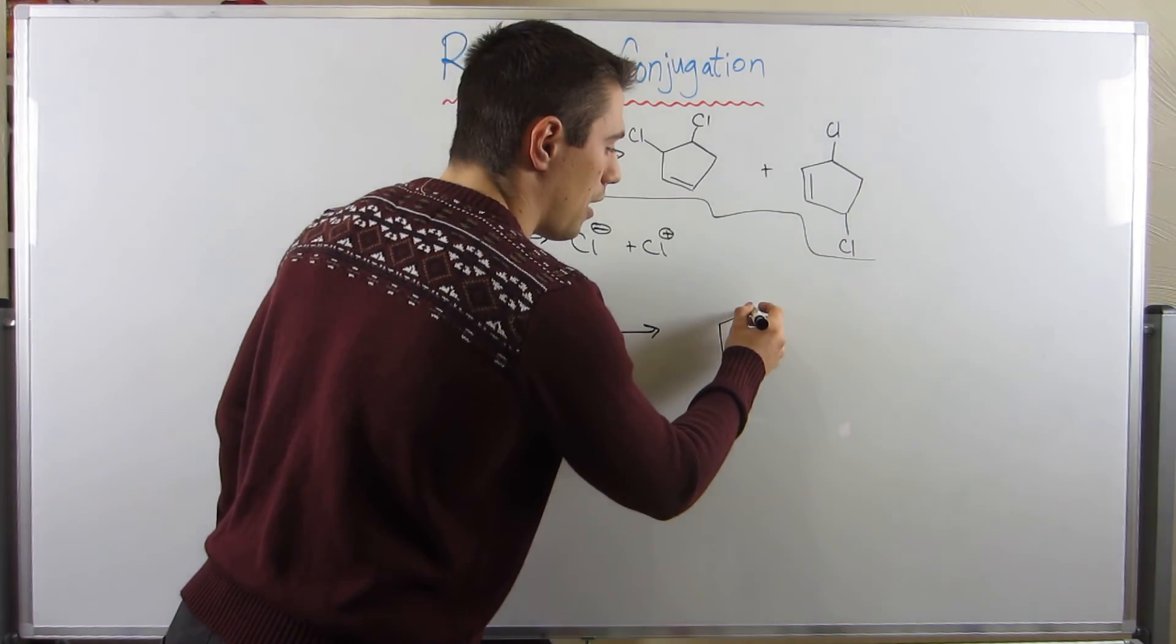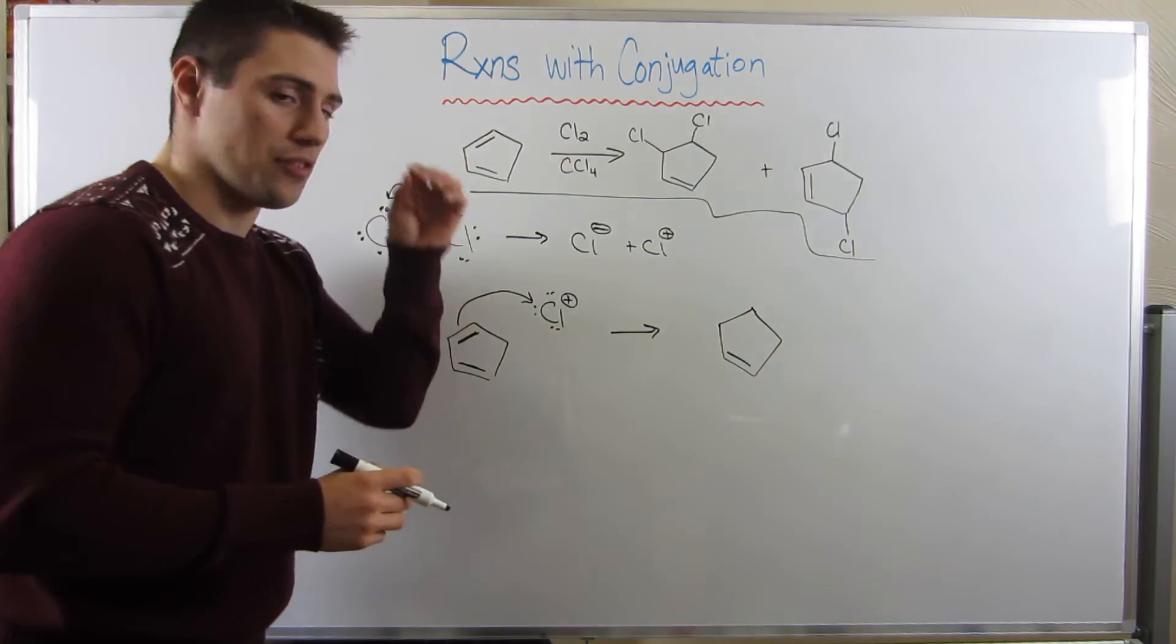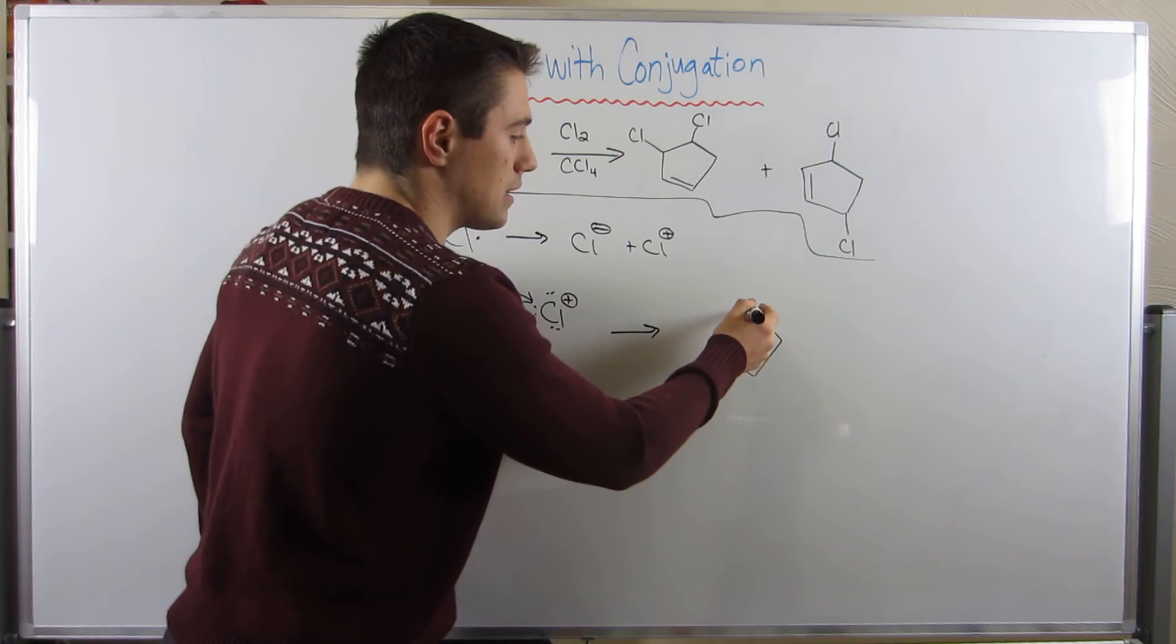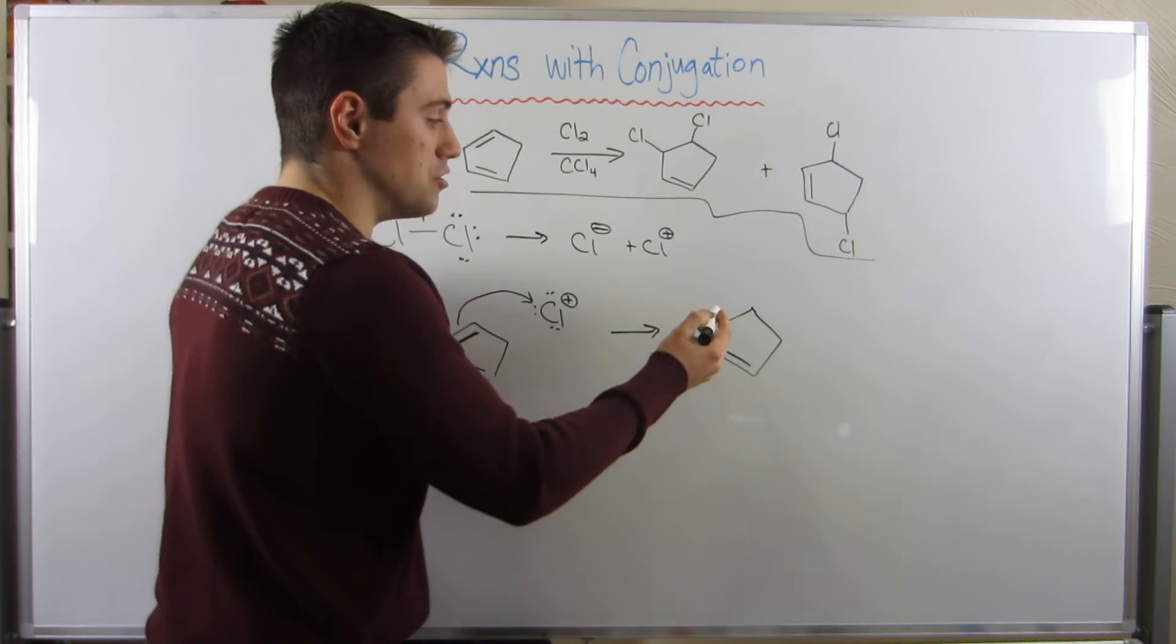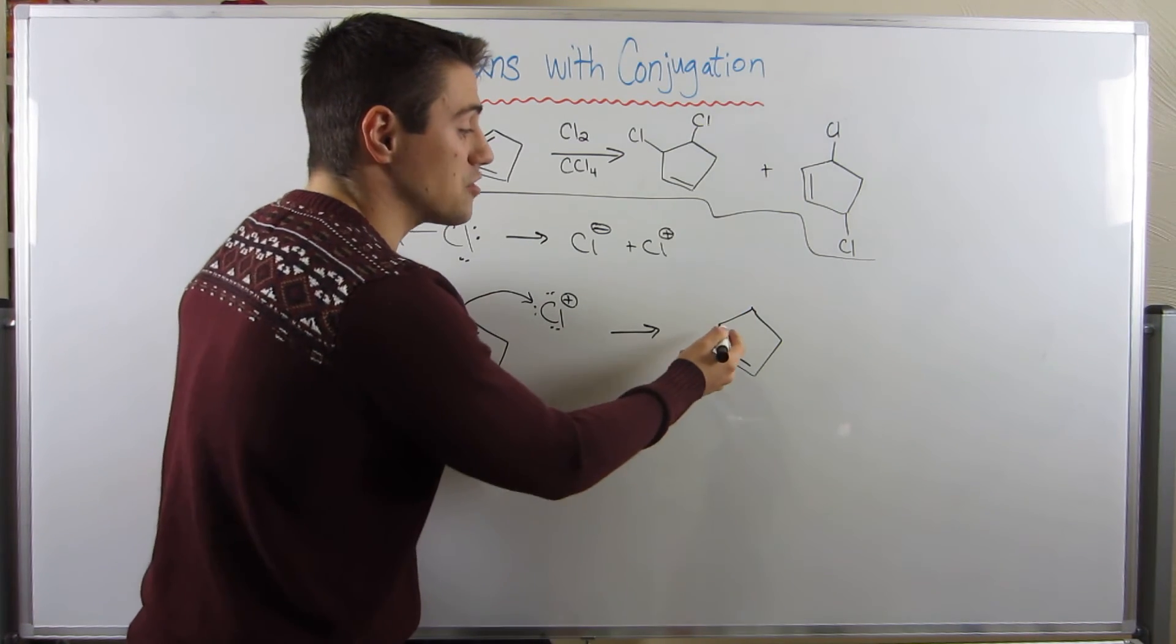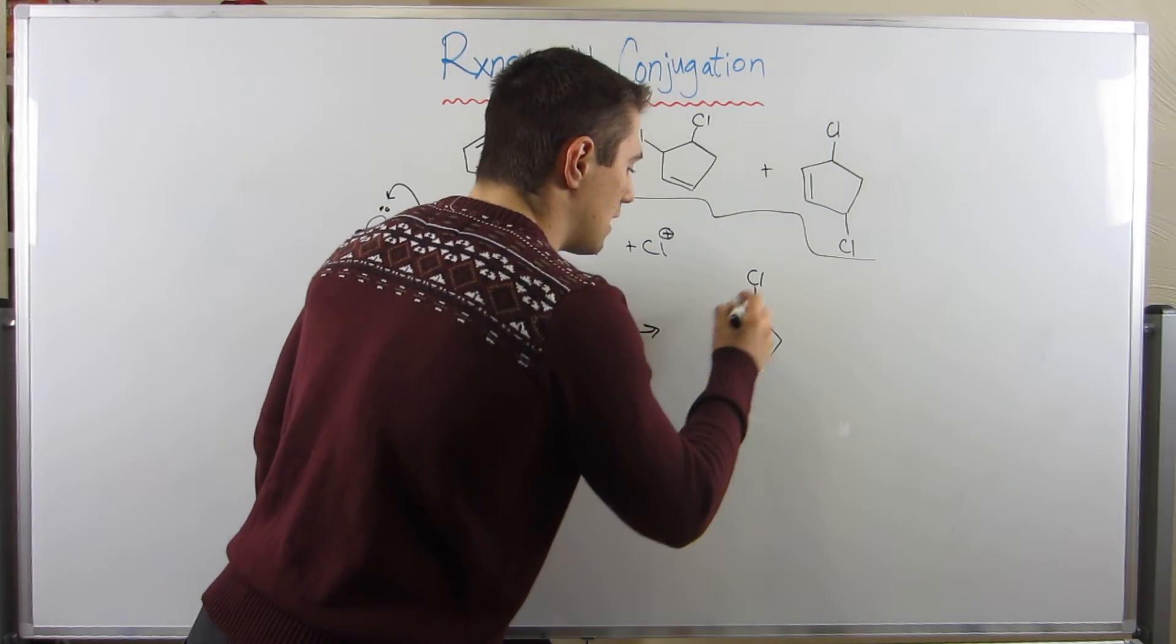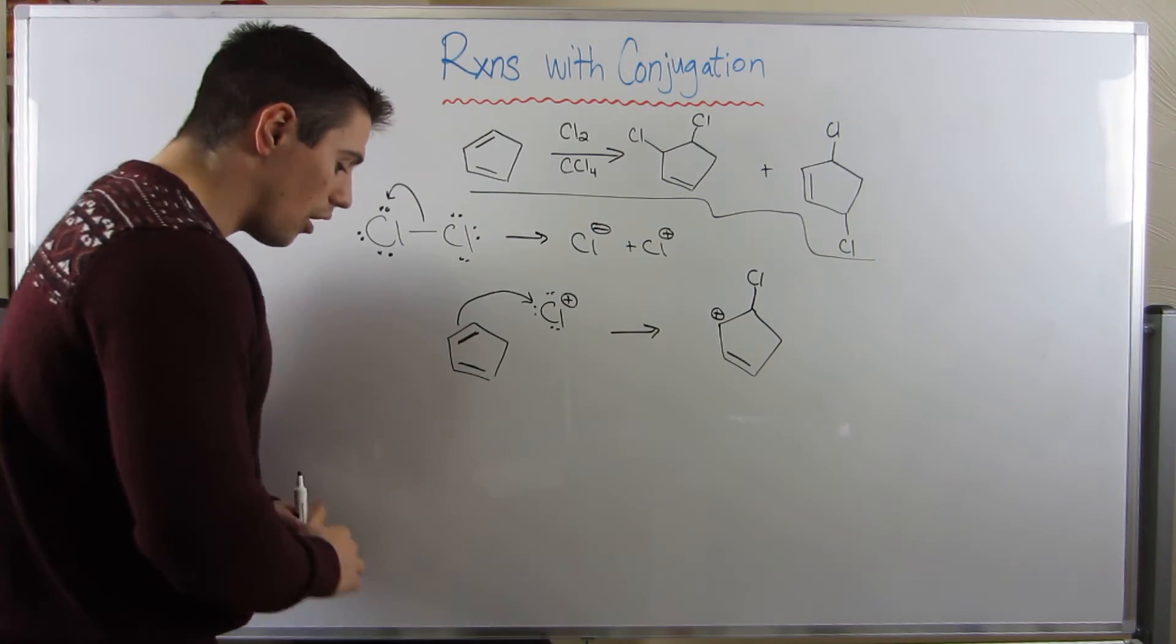And hopefully, you have another one of those light bulb scenarios go off where you think, I can either make this bland secondary carbocation or we can make this dope secondary carbocation that's also allylic. Clearly, we're going with the dope allylic one. So, chlorine gets added here, and now we have a positive charge right there.